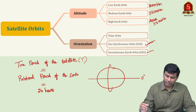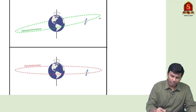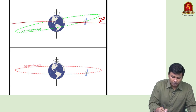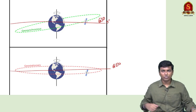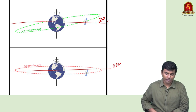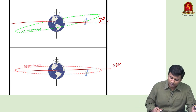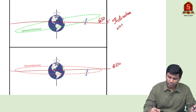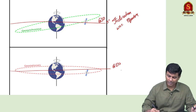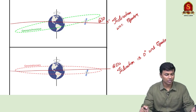Geostationary earth orbit is a special case of geosynchronous orbit. A geosynchronous orbit generally is not placed above the equator, but if a geosynchronous orbit is placed above the equator, it is called geostationary earth orbit. GSO has an inclination with respect to the equator, whereas GEO has an inclination of 0 degrees with respect to the equator. GEO is a special case of GSO.